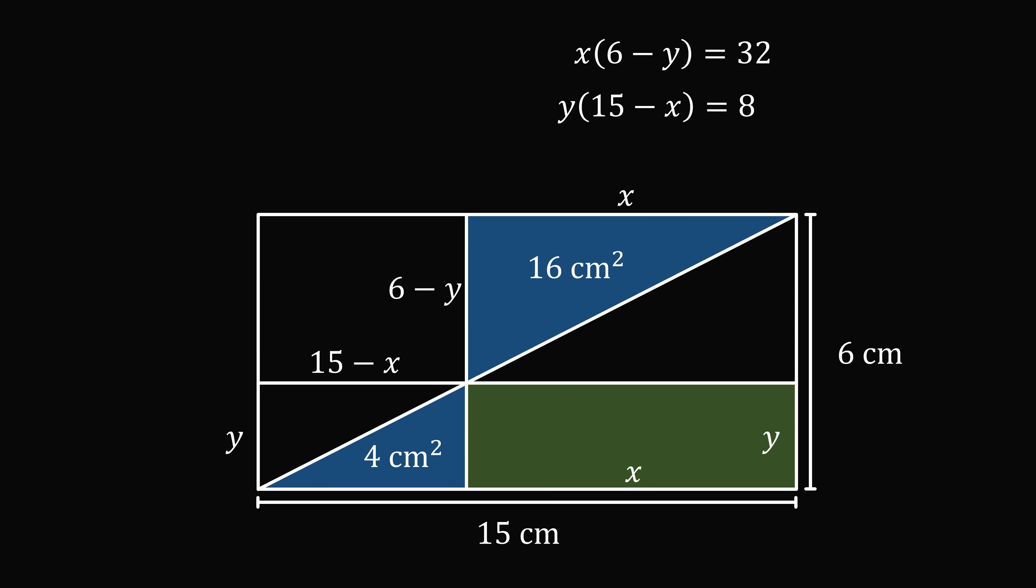Now there's one more thing to notice. These two angles are equal to each other because they're vertical angles. Then these two angles will be equal to each other because they're alternate interior angles, because opposite sides of a rectangle are parallel to each other. So these two triangles are similar to each other. What does that mean? That means their lengths will be in the same ratio. So x divided by 6 minus y is equal to 15 minus x divided by y. We can cross multiply to get xy is equal to 6 minus y multiplied by 15 minus x.